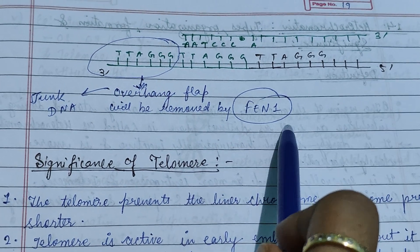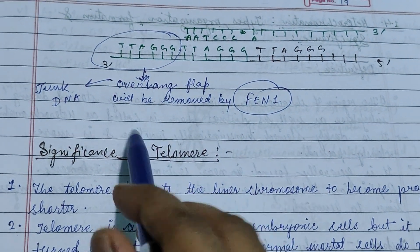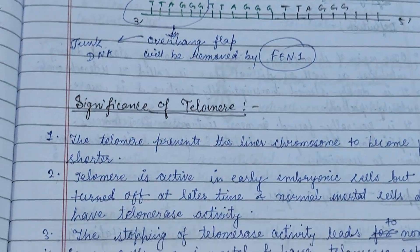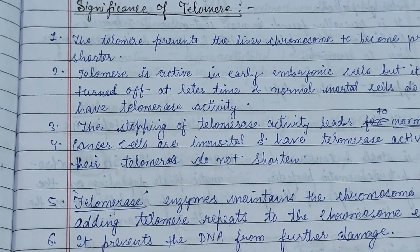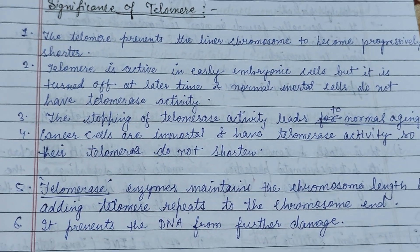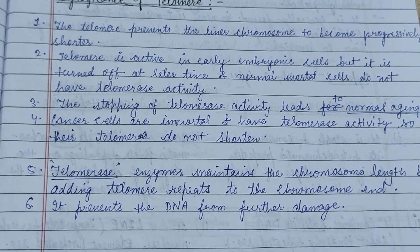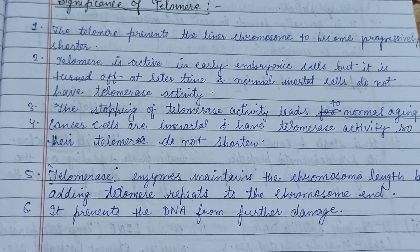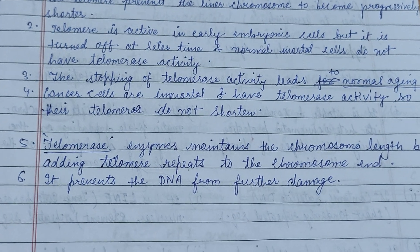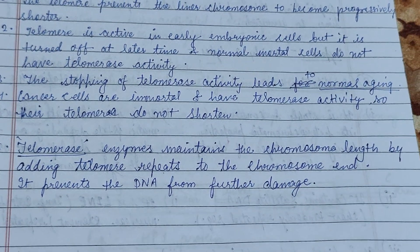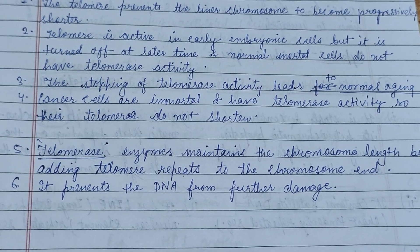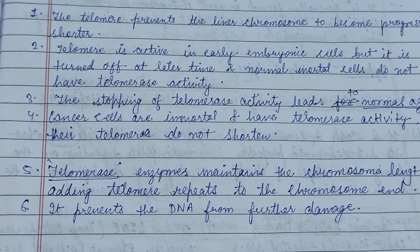The overhangs are removed by FEN1, and the TTAGGG sequence is recognized by the telomerase enzyme. The significance of the telomere is that it prevents linear chromosomes from becoming progressively shorter. Telomerase is active in dividing cells but is turned off in normal mortal cells, which do not have telomerase activity. The telomerase enzyme maintains chromosomal length by adding telomere repeats to chromosome ends and prevents DNA from further damage.